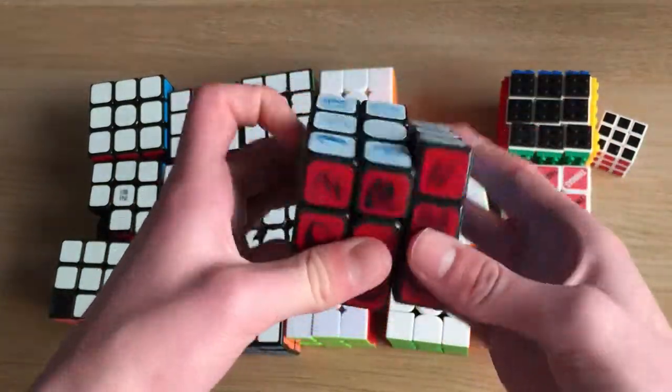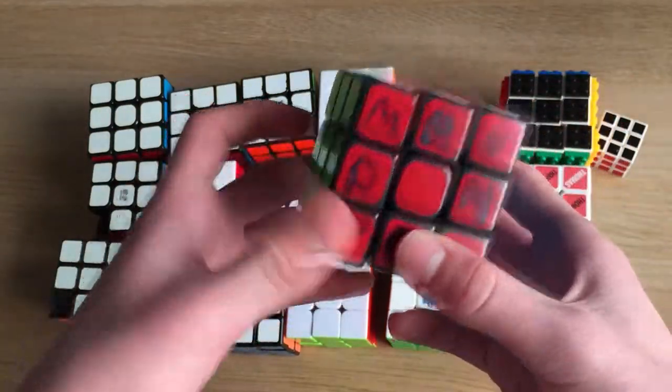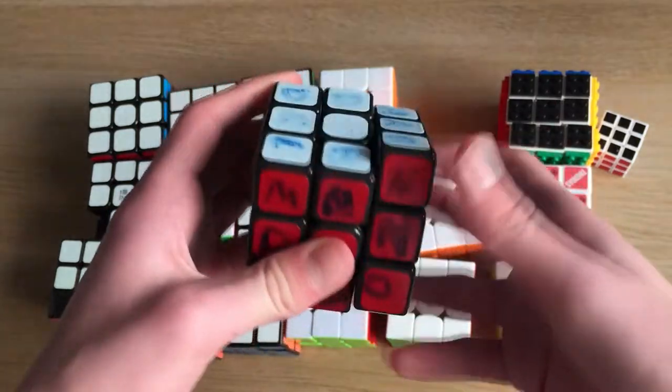Here we have another 3x3, which is store-bought, exactly the same as this one, but I drew on this one to try and learn blind on. I haven't got around to learning blind yet. I probably should do that sometime.